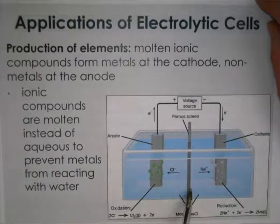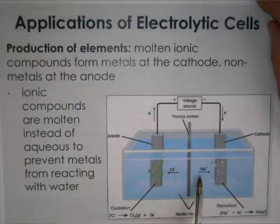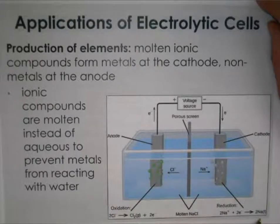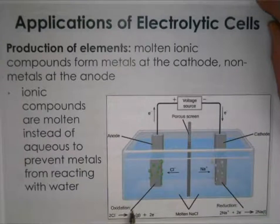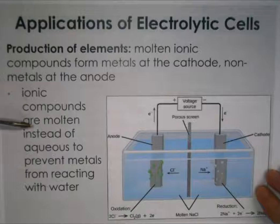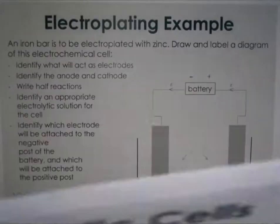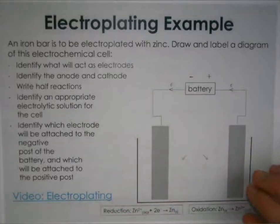For example, to form solid sodium, you use molten sodium chloride — molten just means in liquid form. Because it's liquid, the ions are free to move: sodium moves to the cathode where reduction occurs, forming solid sodium, and chloride anions move to the anode, forming chlorine gas. We use molten compounds instead of aqueous solutions to prevent metals from reacting with water, because Group 1 ions are highly reactive with water.